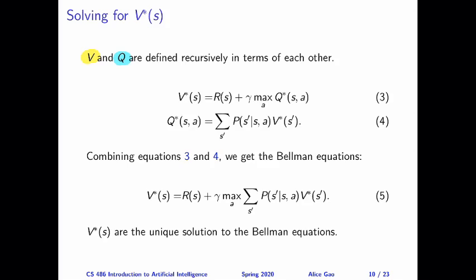It turns out that V and Q have a very natural relationship — we can define V and Q recursively in terms of each other. You have already seen equation 4: we can define Q in terms of Vs. So what's the expected utility of being in state S and taking action A? Well, action A might take us to multiple possible next states, and once it takes us to a particular next state S prime, we can use the V values to tell us how well we're going to do starting from S prime. Taking the summation over all possible next states helps us evaluate how good it is to take that particular action in the current state S.